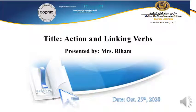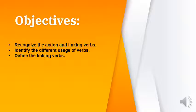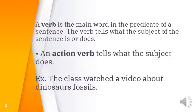Hello and welcome to our new grammar lesson: action and linking verbs. By the end of this lesson you should be able to identify each type. A verb is the main word in the predicate of a sentence. A sentence has a subject and predicate — the predicate starts from the verb till the end of the sentence. The verb tells what the subject of the sentence is or does.